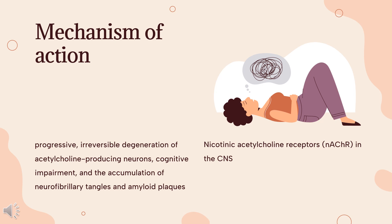Galantamine competitively and reversibly inhibits the acetylcholinesterase enzyme in the CNS — namely in the frontal cortex and hippocampal regions — by binding to the choline binding site and acyl binding site of the enzyme's active site. By blocking the breakdown of ACh, galantamine enhances ACh levels in the synaptic cleft.